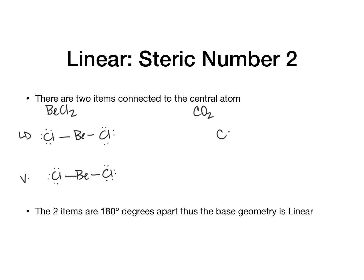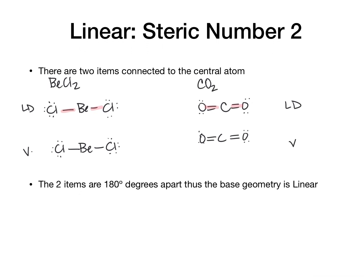For CO₂, we have carbon double bonded to oxygens, both of which have two lone pairs. Looking at both BeCl₂ and CO₂, we have one, two bonds. For CO₂, there are in fact four bonds connected, but just two items — it is the number of atoms or lone pairs connected to the central atom, not the number of bonds. In both the Lewis dot and VSEPR structures, these look identical, and the compounds are 180 degrees apart. The base geometry is linear, which makes sense because if you have two things connected, the farthest they can be is 180 degrees.